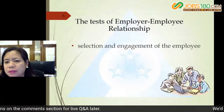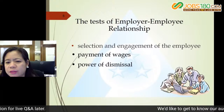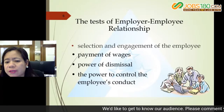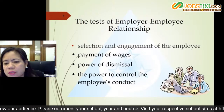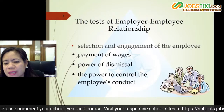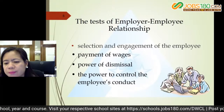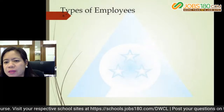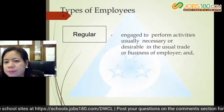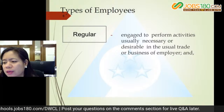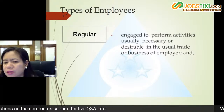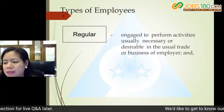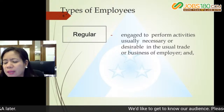The test of employer-employee relationship has four elements: selection and engagement of the employee, payment of wages, power of dismissal, and power to control the employee's conduct. There are seven types of employees: regular, probationary, casual, project-based, seasonal, fixed-term, and contractual.